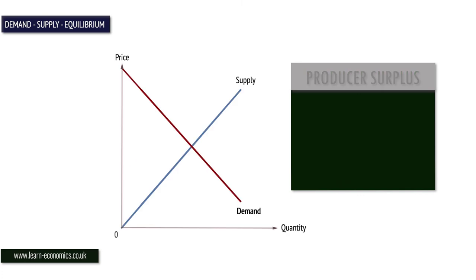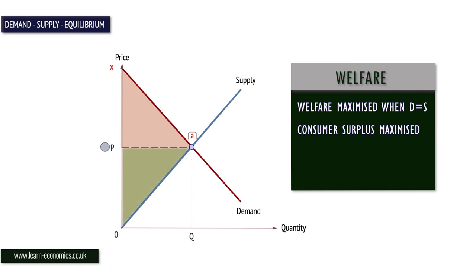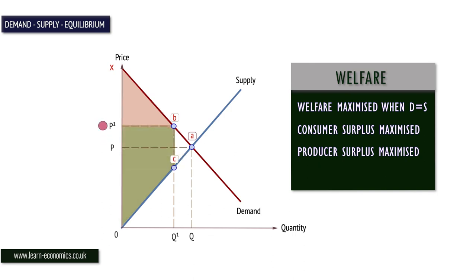Economic welfare, as measured by consumer and producer surplus, is maximised at the market equilibrium price and quantity. At equilibrium, consumer surplus is maximised at area XAP and producer surplus is maximised at PA0. A non-equilibrium price at P1 causes demand to contract and consumer surplus to shrink while producer surplus increases. However, there is a net welfare loss of area B, A, C.